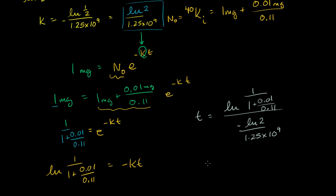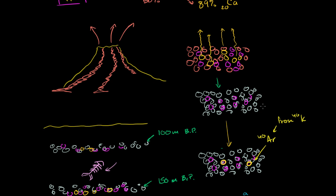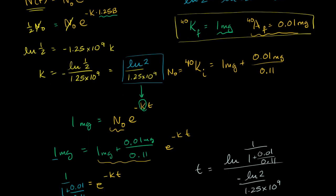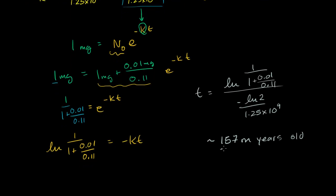We get approximately 156.9 million years — so roughly 157 million years old. The math, while a little involved, is something you'd see in a pre-calculus or algebra 2 class when studying exponential growth and decay. The point is it's not some crazy voodoo — it's accessible high school mathematics. If you saw a sample with this ratio of argon-40 to potassium-40, you'd be able to figure out it's a 157-million-year-old sample of volcanic rock.